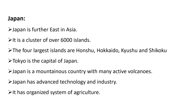Japan is further east in Asia. It is a cluster of over 6,000 islands. The four largest islands are Honshu, Hokkaido, Kyushu, and Shikoku. Tokyo is the capital of Japan. Japan is a mountainous country with many active volcanoes. Japan has advanced technology and industry, and an organized system of agriculture.